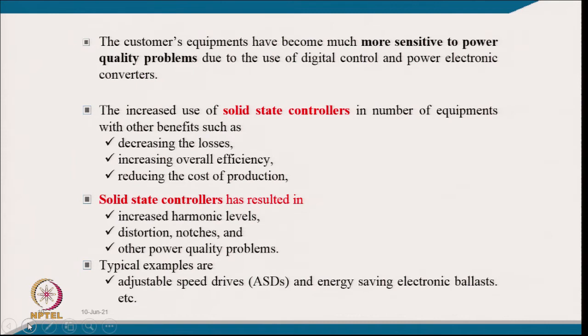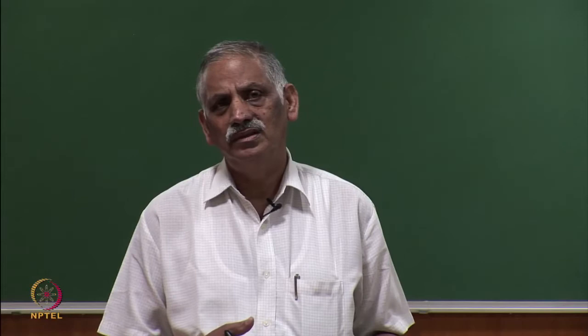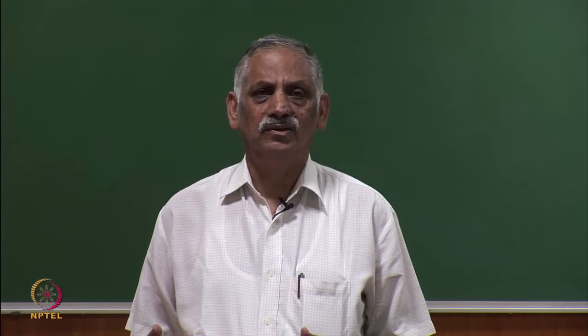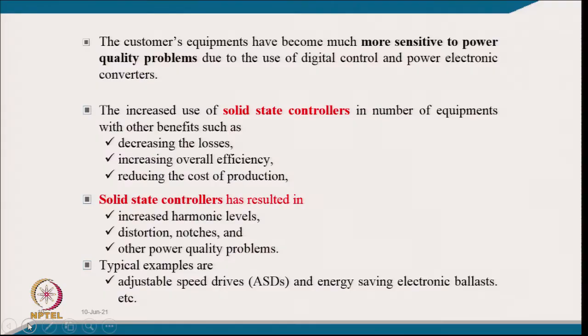This creates power quality problems in the distribution system, and the distribution utility company cannot afford the additional losses or additional cost of installing higher-rated distribution equipment. They will directly or indirectly penalize consumers for drawing bad quality power. Typical examples include adjustable speed drives and energy-saving electronic ballasts.